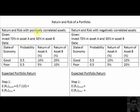Let's assume some numerical information. We want to invest 70% of our money in asset A and 30% in asset B. We have assumed two states of the economy: one where the economy is doing very well, and another where it is not doing so good. The probability of each state is 50%. During good times, asset A provides a 10% return and asset B provides a 20% return. During bad times, asset A provides a 5% return and asset B provides a 10% return.